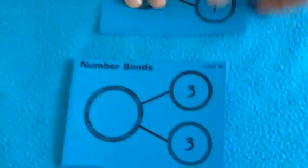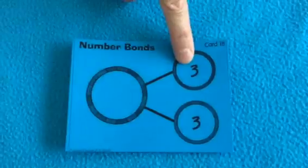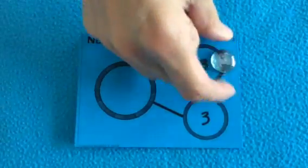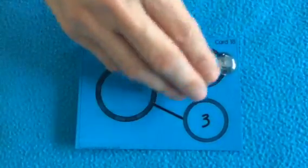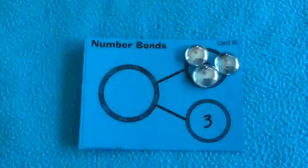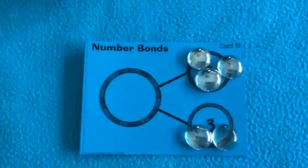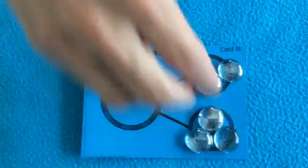How many gems do you think I should put here? That's right. Three. One, two, three. And how many gems here? Three. One, two, three. Now what do I need to do?